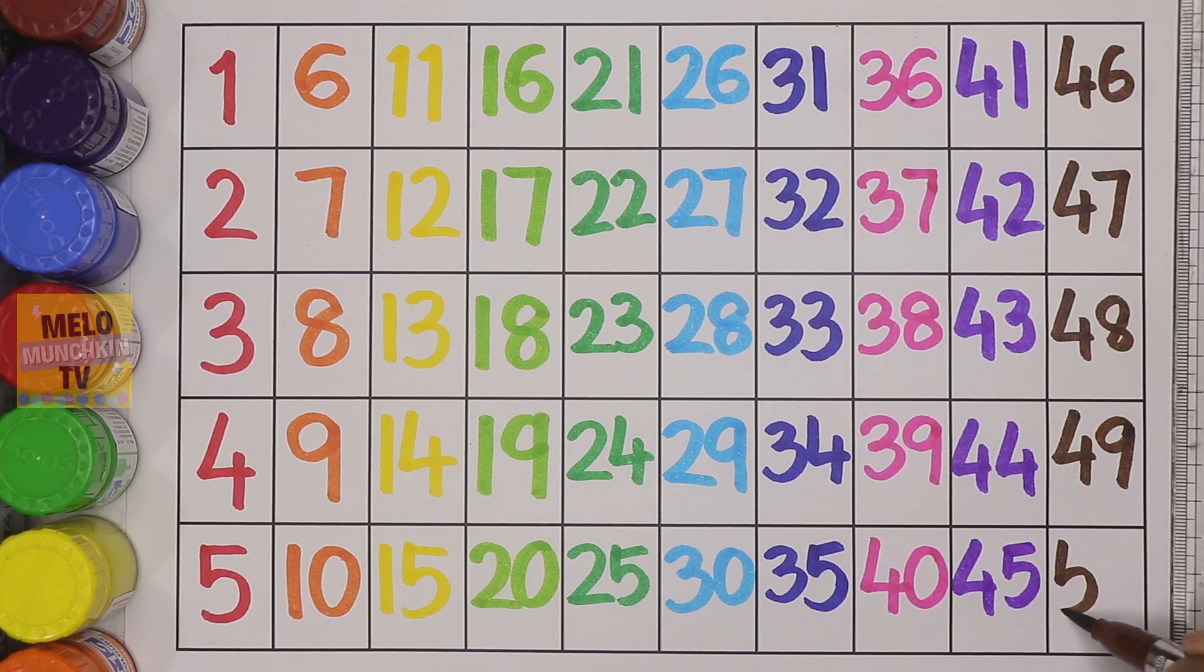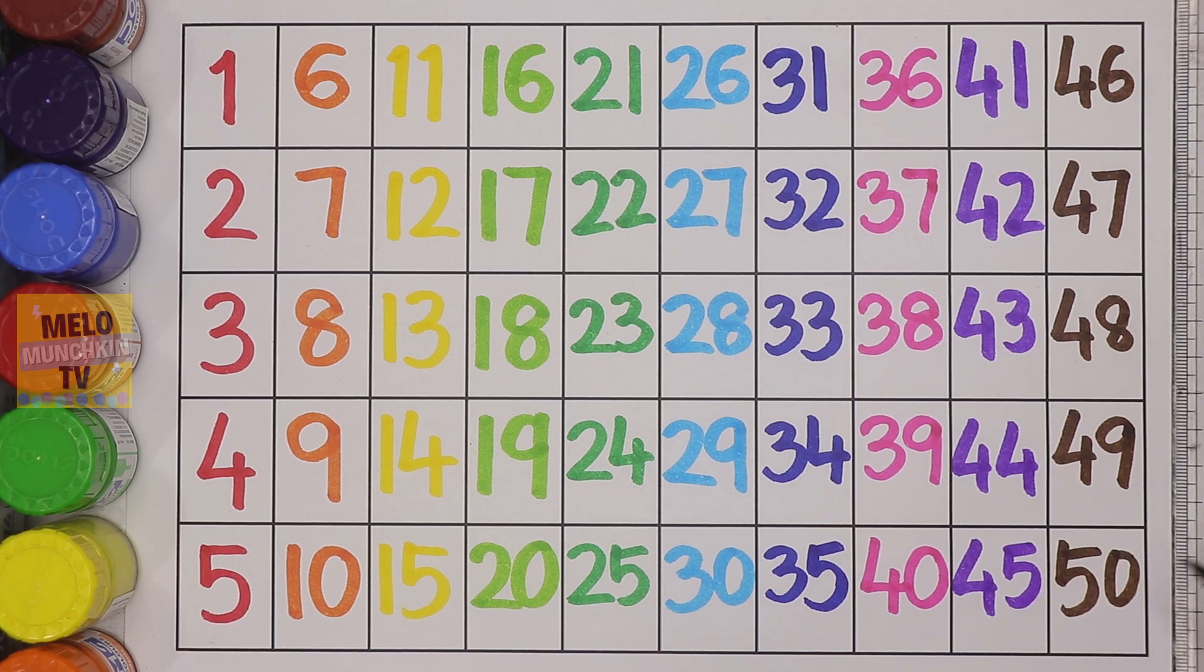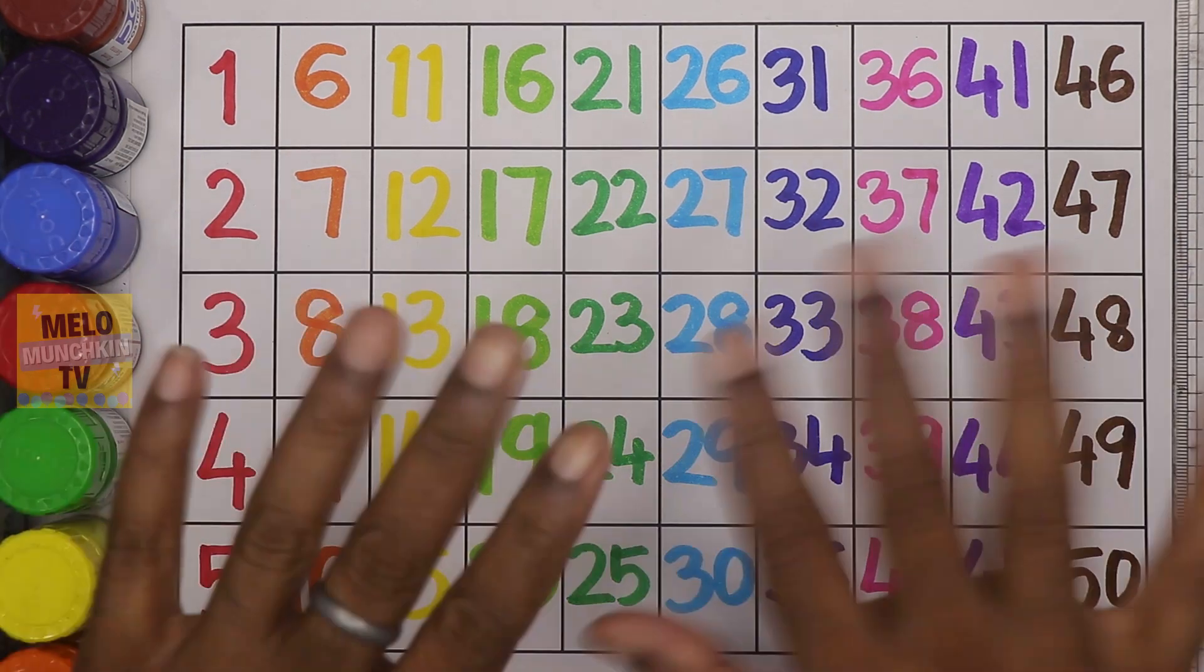and fifty. Okay, so we have completed our numbers from one to fifty with different colors. So that's it for now, kids. I hope you have understood and learned something from this video. If you do, hit a thumbs up and share this video with your friends. See you in my next video. Till then, take care and bye!